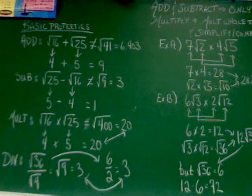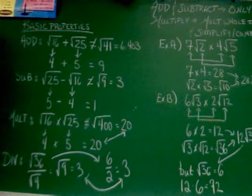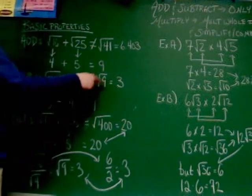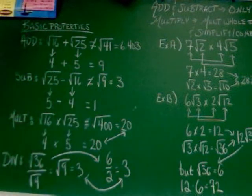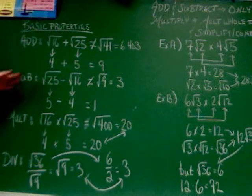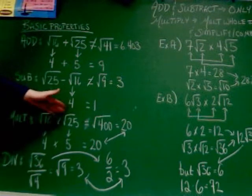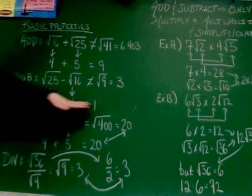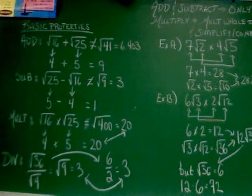The same thing is true for subtraction. You can't do the square root of 25 minus the square root of 16 by doing 25 minus 16 equals 9 and then taking the square root of 9 to get 3 — wrong answer. You've got to go through these in parts. Square root of 25 is 5, square root of 16 is 4, and 5 minus 4 makes 1. That's the way you've got to do it.